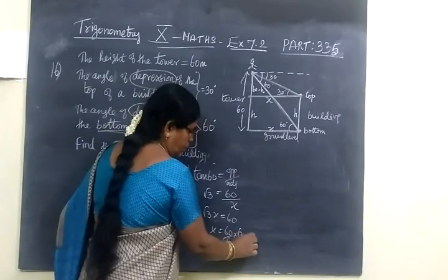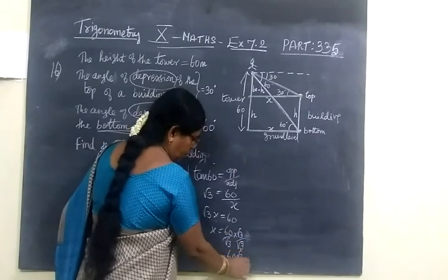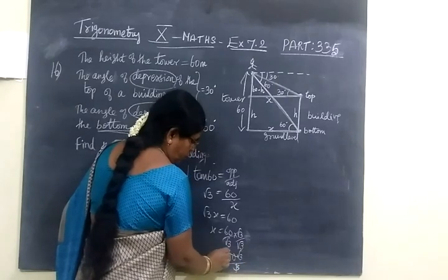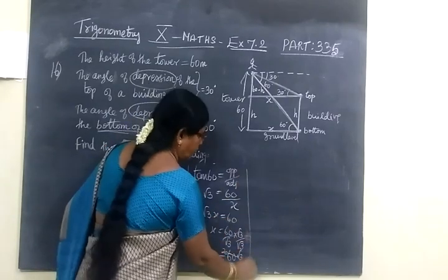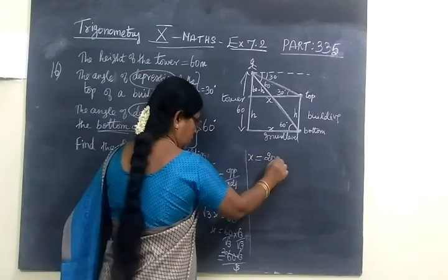So into root 3 by root 3. So this equals to 60 root 3 by root 3 into root 3, 3. If you answer you get 20. Therefore x equals to 20 root 3.